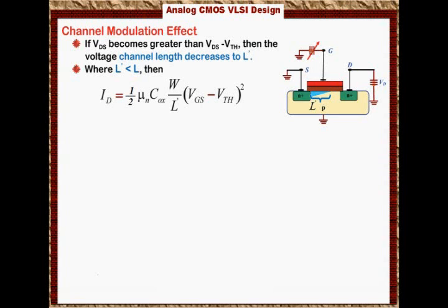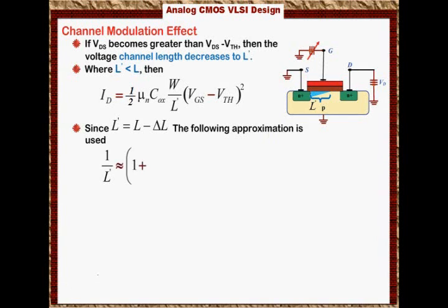Now, we can say that since L prime will equal to L minus delta L, the following approximation can be used. We can say that one over L prime is approximately equal to 1 plus delta L over L, this whole thing divided by L.